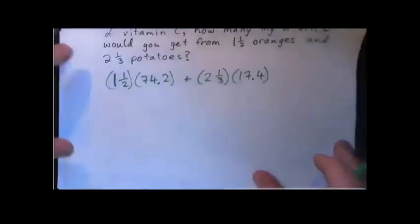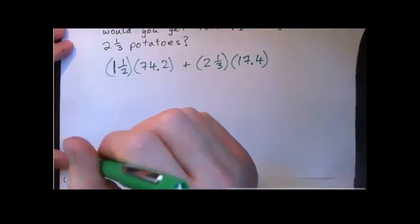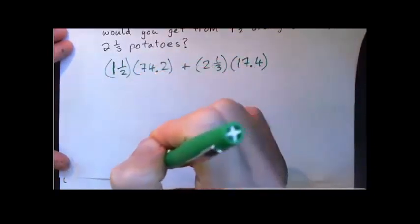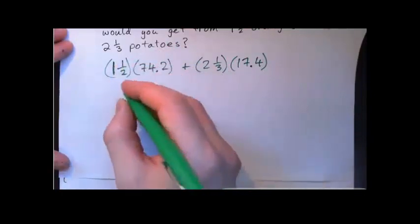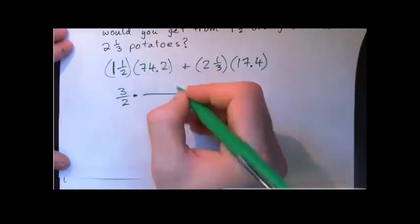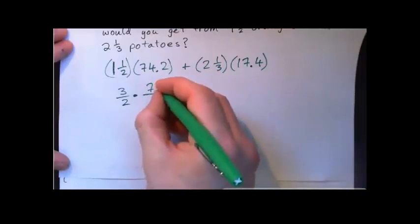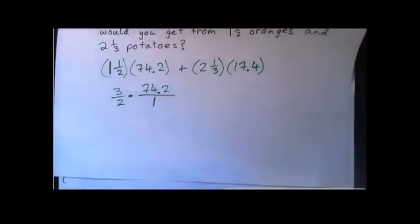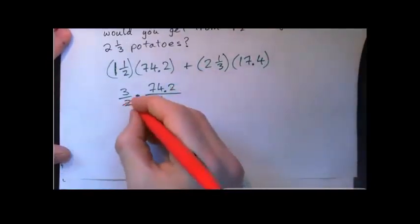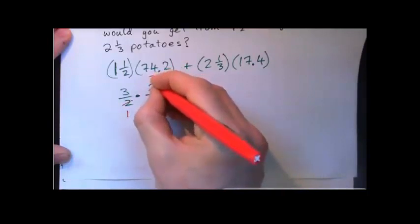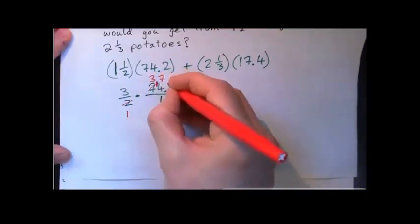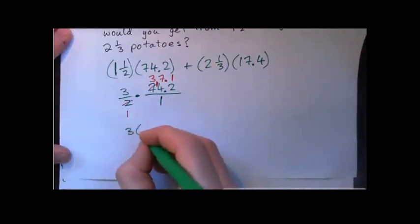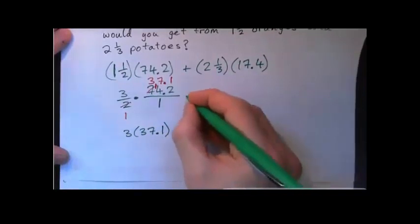Multiplying by the fractions actually works out best here. So if I turn one and a half into an improper fraction: two times one is two, two and one is three — that's three over two multiplied by 74.2 over one. And since 74.2 ends in an even number, I can go two into two once, two into seven goes three times remainder one, two into fourteen goes seven times, decimal point up here, two into two goes once. So this becomes three times thirty-seven point one.